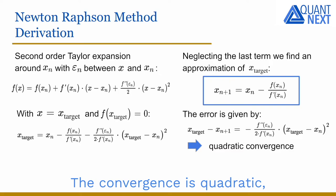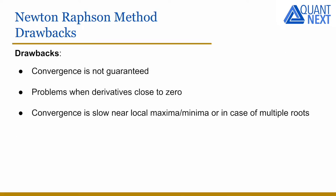The convergence is quadratic, so it is quite fast. However, there are some drawbacks with this method. The convergence is not guaranteed. There can be problems when the derivative is close to zero, and the convergence can be slow near local maxima, minima, or in case of multiple roots.